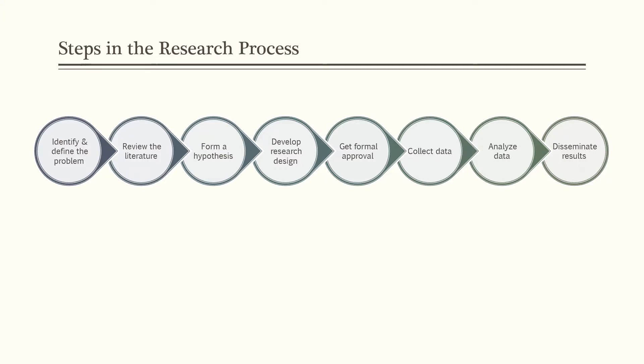From there, you want to form your hypothesis and develop your research design — determining what research method to use, what your materials and methods will be, and how you will obtain data. Once you've hammered out your research design, you will need to get formal approval from any appropriate boards or committees. If your research involves humans in any way, even if it just involves surveying them, you need to obtain approval from the institutional review board, or IRB. They will determine if you must submit more documentation or if your project is exempt.